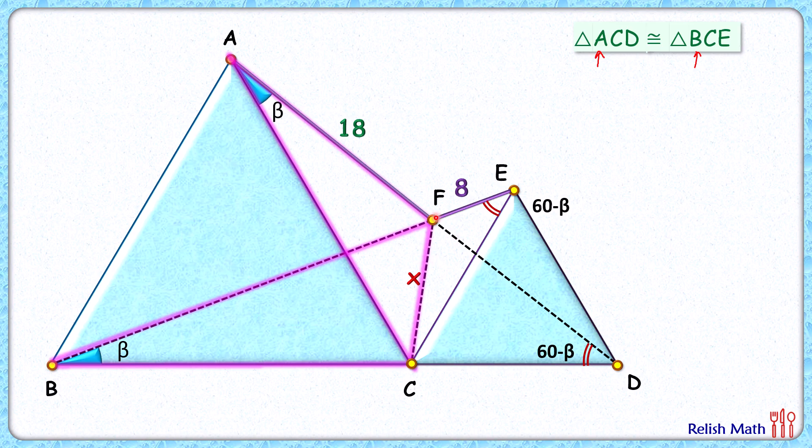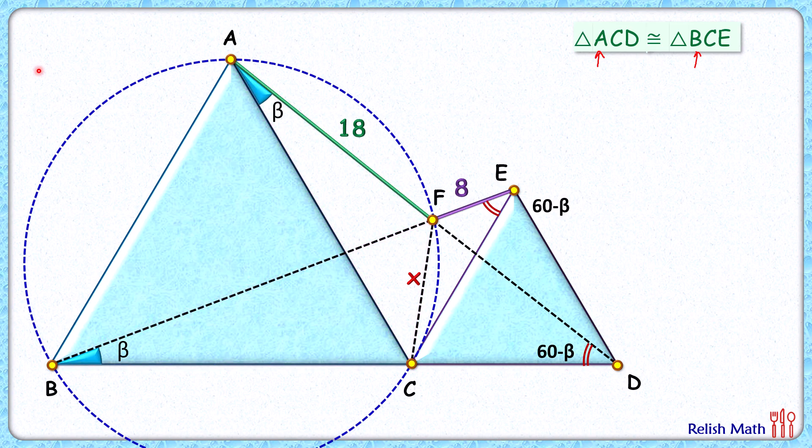By theorem, if a line segment subtends equal angles at two points, then those two points and the endpoints of the line segment lie on the same circle. So we can draw a circle passing through all these four points.